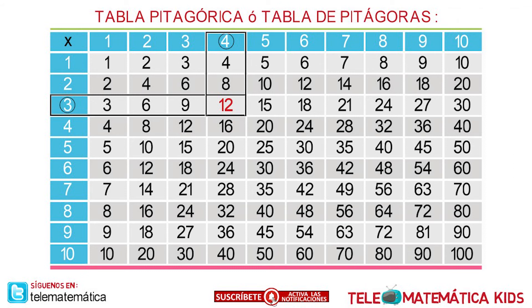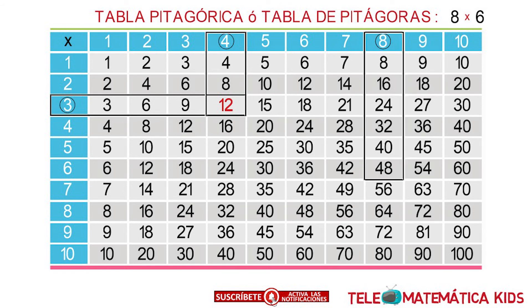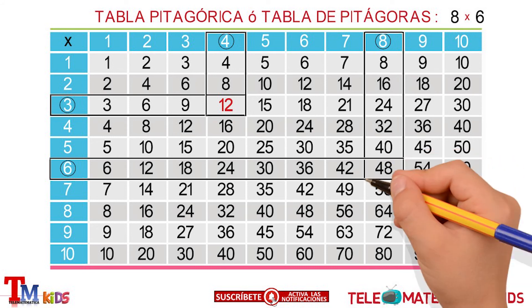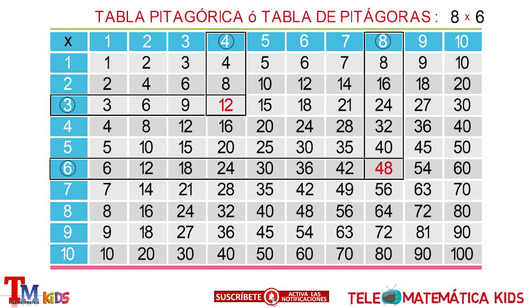Let's see another example: 8 multiplied by 6. As the first step, we will select the row or column that contains the first factor, which is the number 8. The second step is to select the column that contains the second factor, which is the number 6. As the third step, we select the value found at the intersection of the row and column as the result. Then, 8 multiplied by 6 is equal to 48.